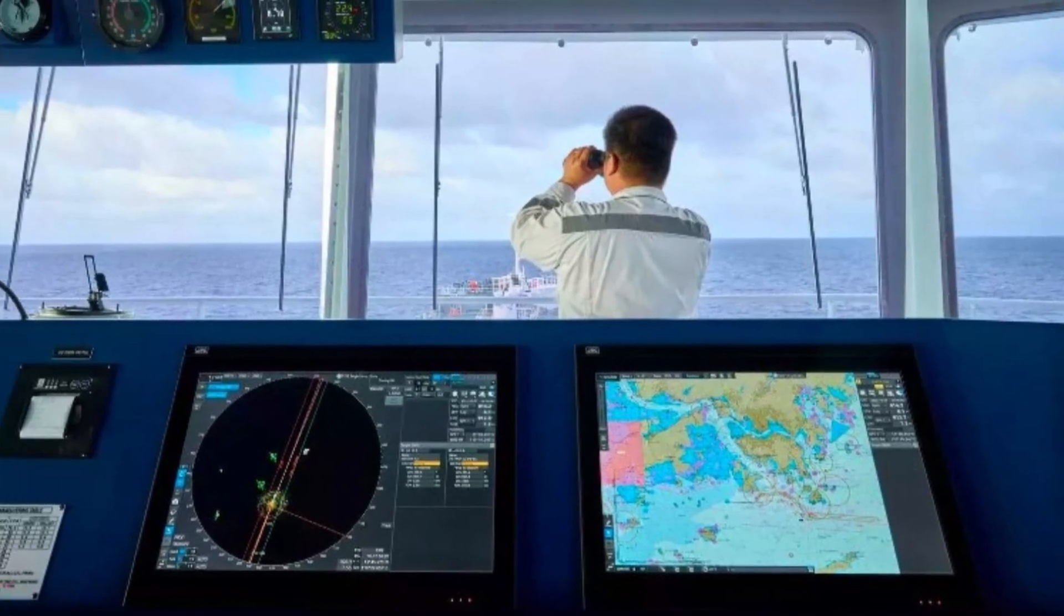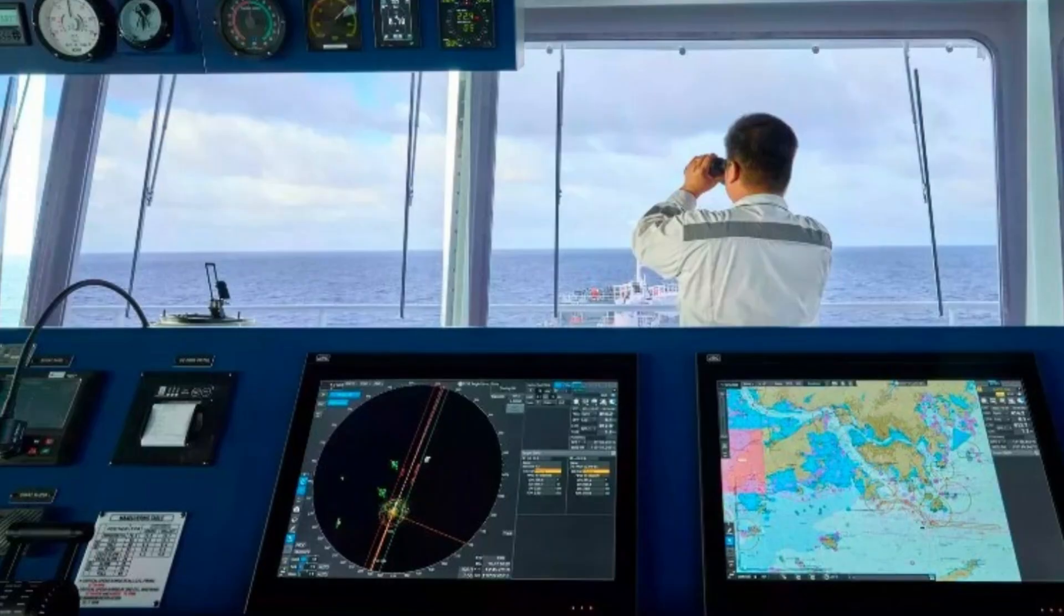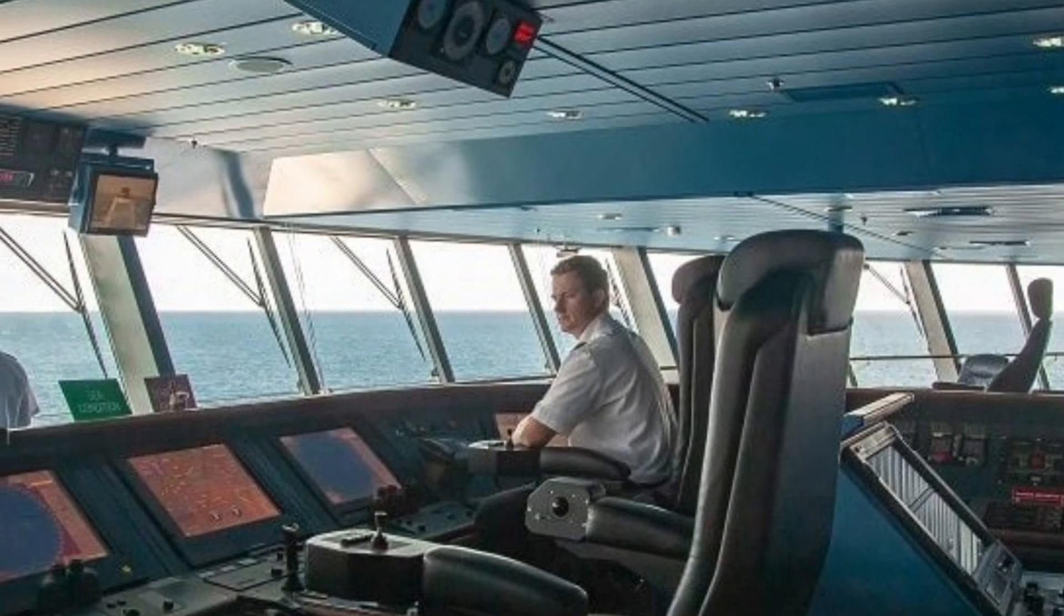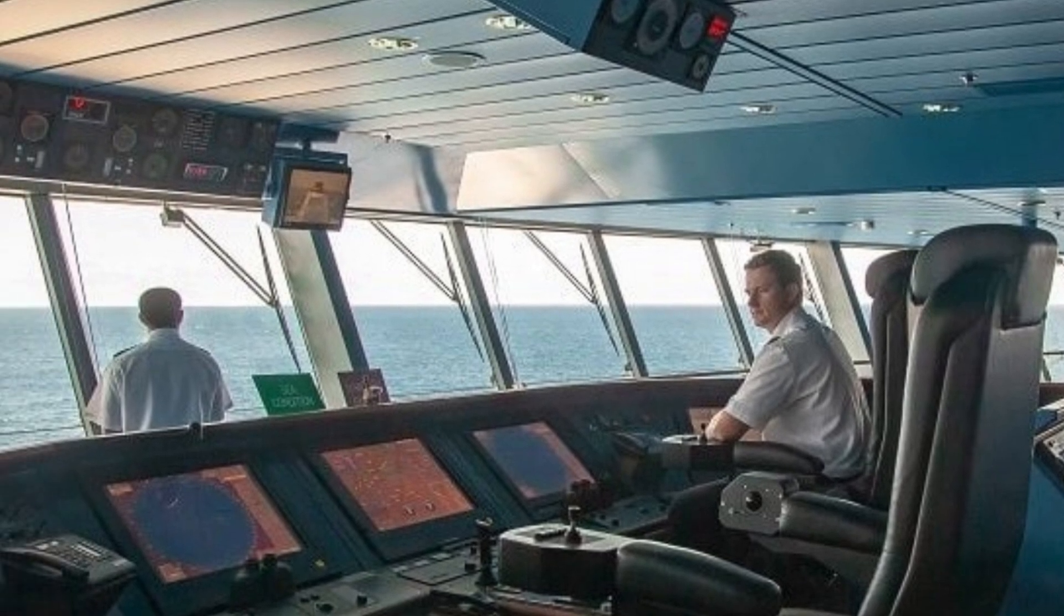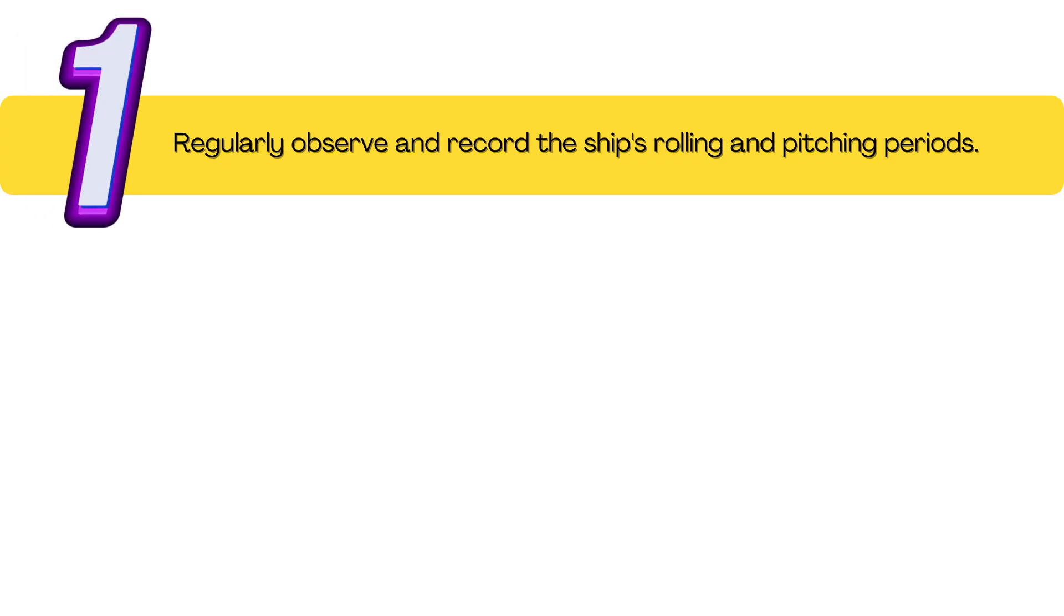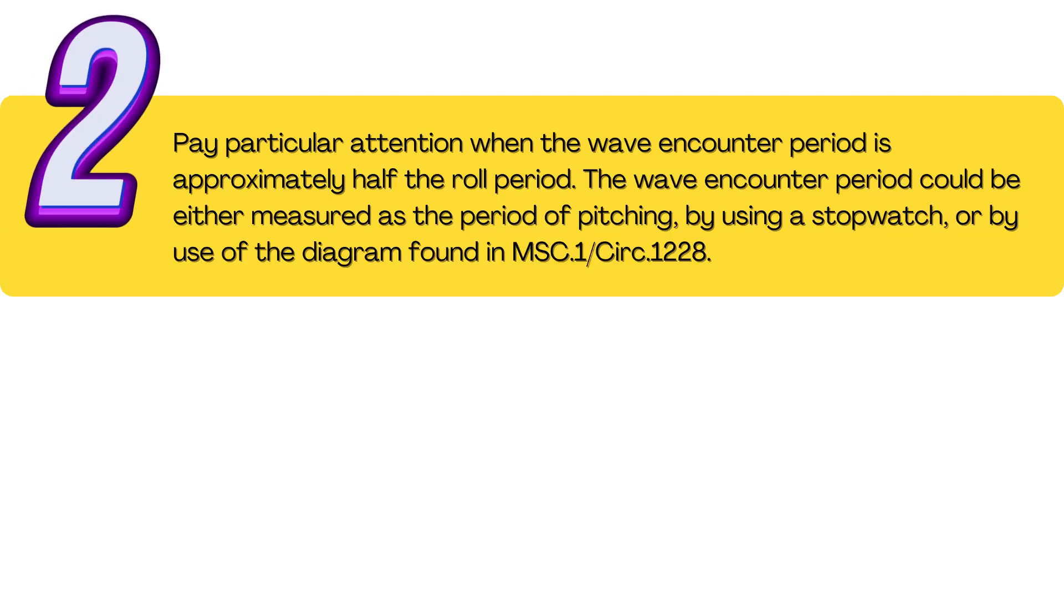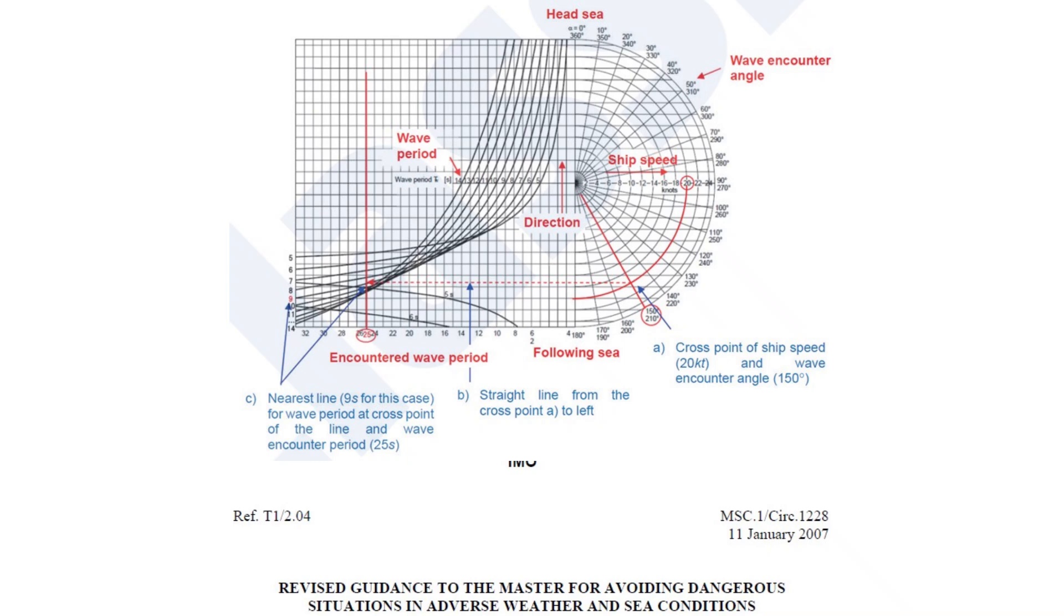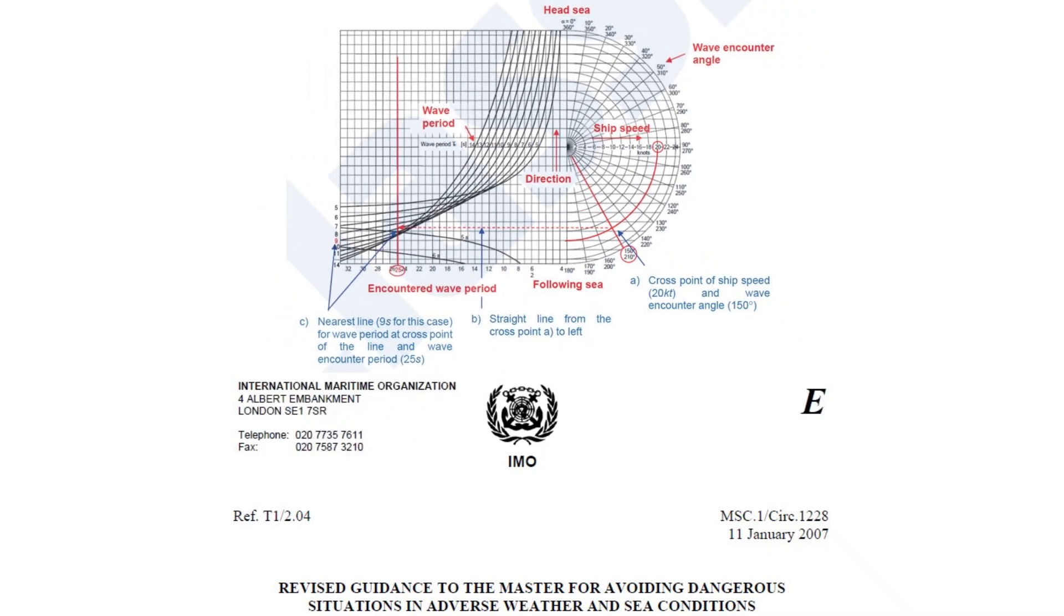The officer of the watch has a critical responsibility in monitoring ship motions and environmental conditions to anticipate and prevent parametric rolling. To effectively monitor these conditions, the officer of the watch should regularly observe and record the ship's rolling and pitching periods. Two, pay particular attention when the wave encounter period is approximately half the roll period. The wave encounter period could be either measured as the period of pitching, by using a stopwatch, or by use of the diagram found in the Maritime Safety Committee, Circular 1228, of the International Maritime Organization.